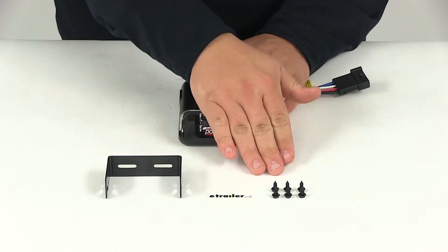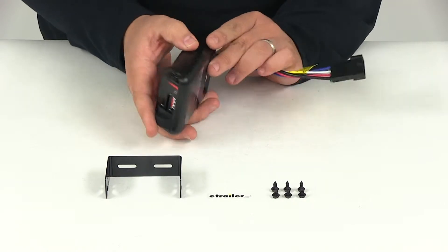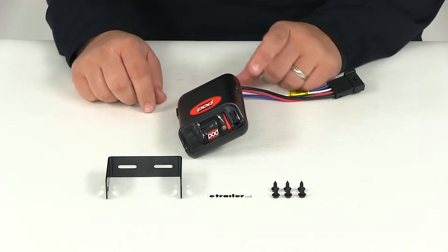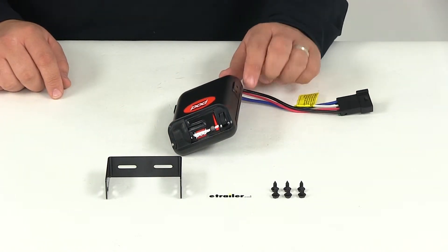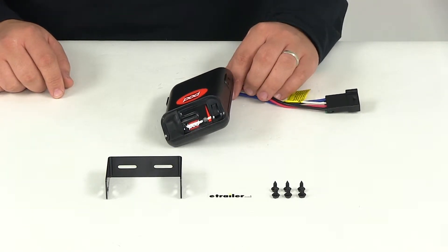The mounting bracket and hardware are all included. There's no need to mount this level. You can actually swivel it a little bit inside the bracket. Additional pigtail harnesses are sold separately, or plug-in vehicle specific brake controller adapters that can be used for certain applications to further reduce installation time.